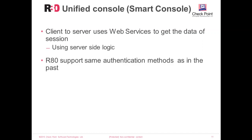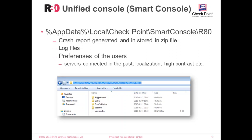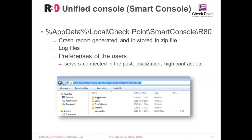In R80, Smart Console supports the same authentication methods as previous releases. When installing the R80 Smart Console on a Windows machine, all local settings, crash reports, and log files are stored in the AppData\Local\Checkpoint\SmartConsole R80 folder. If Smart Console crashes, you can find the crash report compressed into a zip file, useful when opening a service ticket with the Technical Assistance Center. The folder also contains log files for client-server communication and user preferences, such as which servers the user connected to, localization settings, and high contrast.